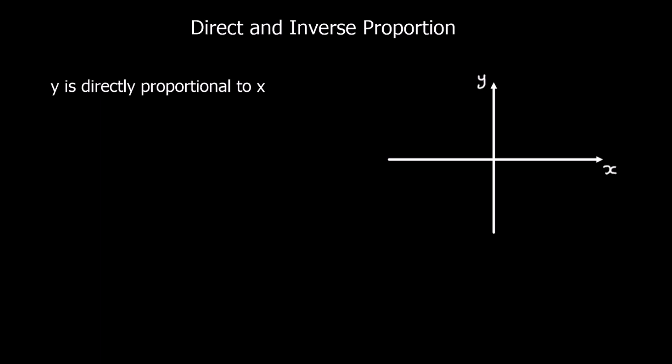This video is about direct and inverse proportion. We're going to start by looking at direct proportion. So here we've got y is directly proportional to x. What that means is if y goes up, x goes up. If y goes down, x goes down. That's what a proportional relationship is. Sometimes you'll see it written as y and this symbol, which means directly proportional — y with the proportionality symbol, then x.